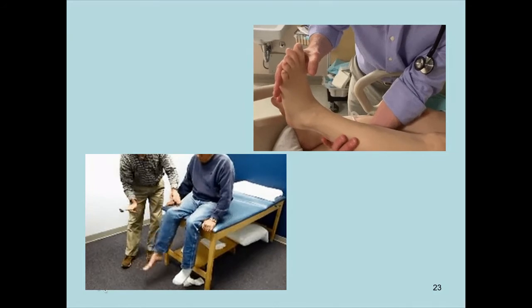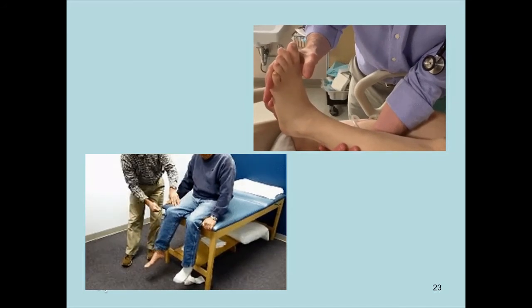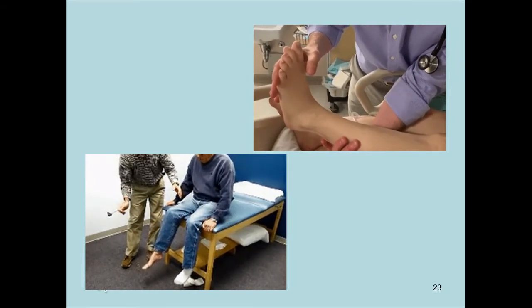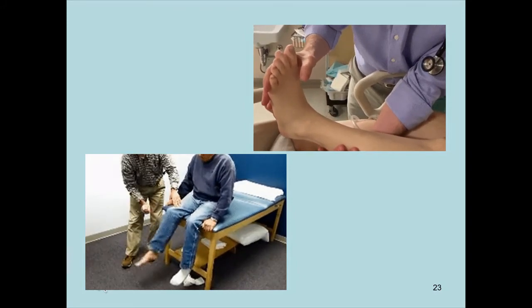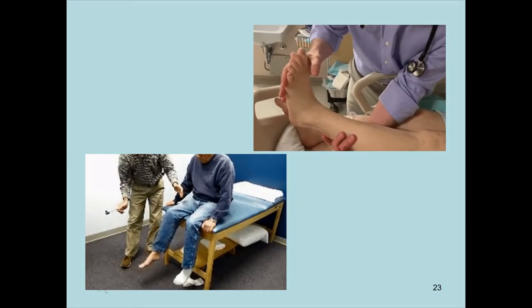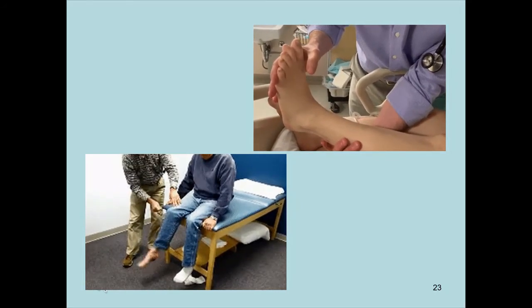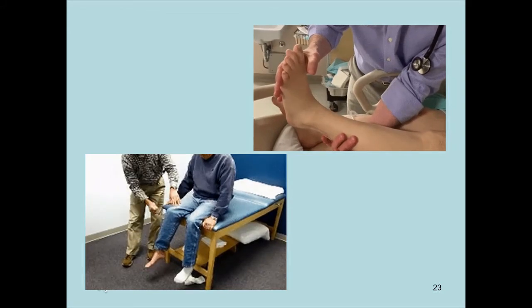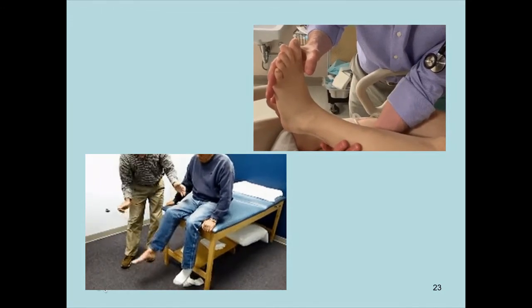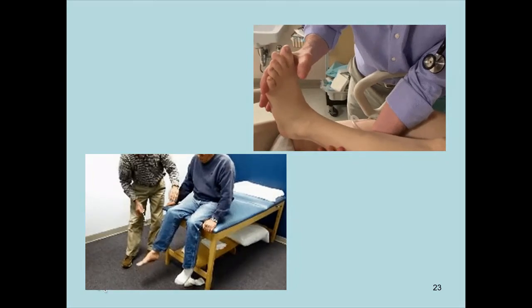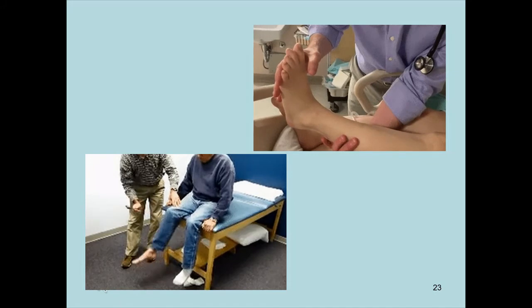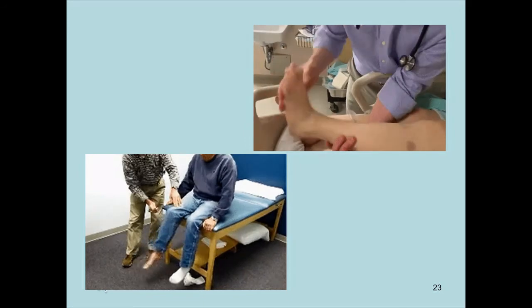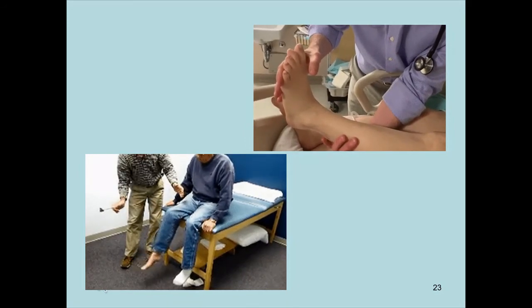Another serious red flag is clonus. Videos demonstrate this: when the ankle is forcibly dorsiflexed, the plantar flexors spasm causing plantar flexion, then the dorsiflexors spasm, creating alternating oscillation. Similarly, during a patellar knee jerk test, the hamstrings and quads constantly fight each other. Clonus indicates neurological damage. It's not something routinely tested in a general physiotherapy assessment, but you will come across it.